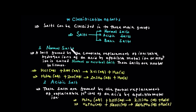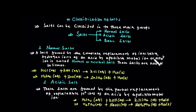The first type is normal salt. A normal or neutral salt is formed by the complete replacement of all ionizable hydrogen of the acid by a positive metal ion or ammonium ion.